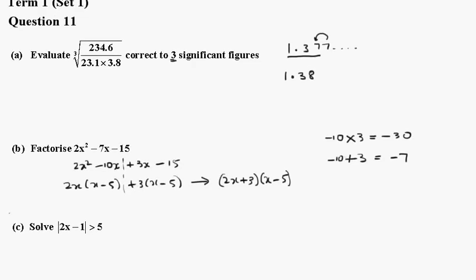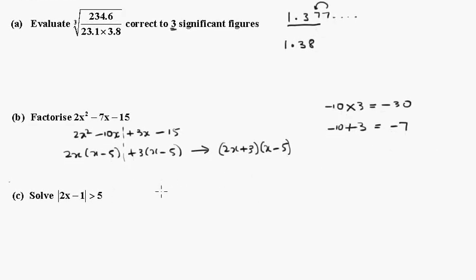Next one. Now 2x minus 1 is greater than 5, or 2x minus 1 is less than minus 5. So 2x is greater than 6, which makes x greater than 3. Or 2x is less than minus 4, so x is less than minus 2.